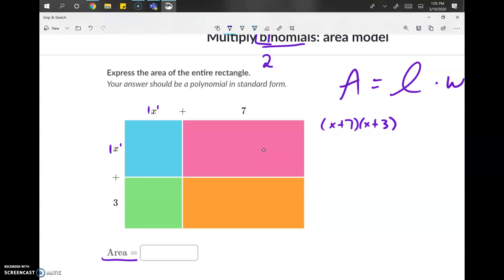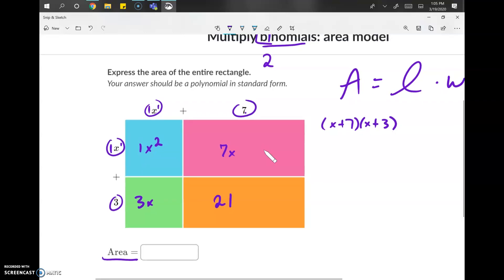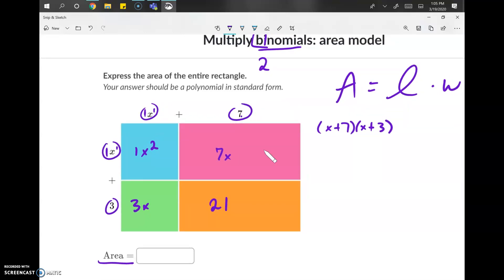So we got one times one is one, x times x is x squared. One times seven is seven times x is seven x. One times three is three times x is three x. And three times seven is 21. So all I've done is the corresponding elements. I've multiplied in the correct boxes. And you can see that there's a pattern here.